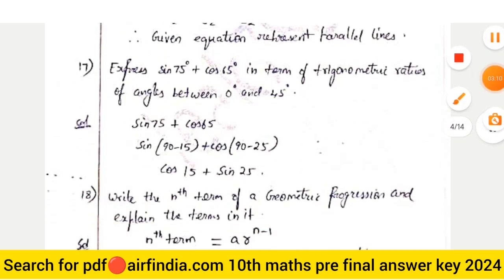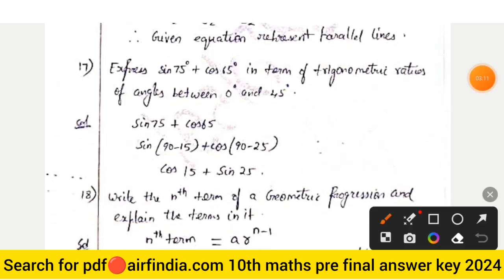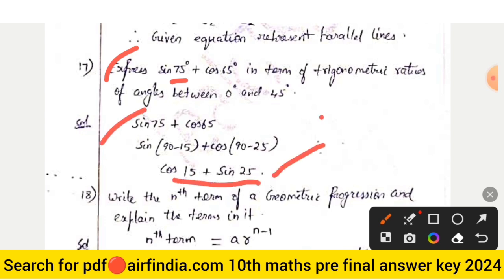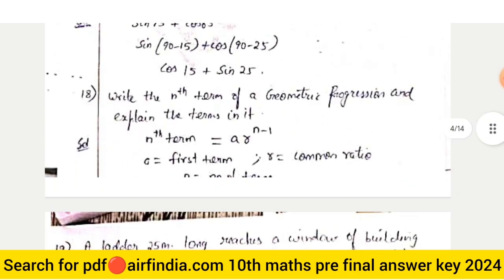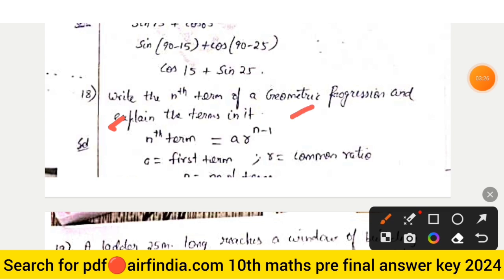Question number 17: express sin 75° + cos 65° in the form of trigonometric ratios of angles between 0° and 45°. Question number 18: write the nth term of a geometric progression and explain the term — the key term is common ratio.